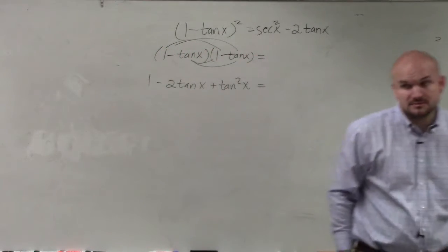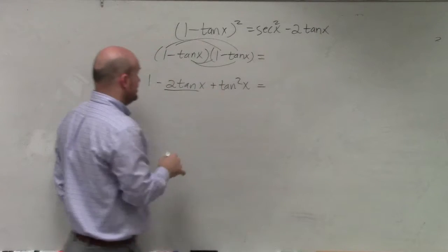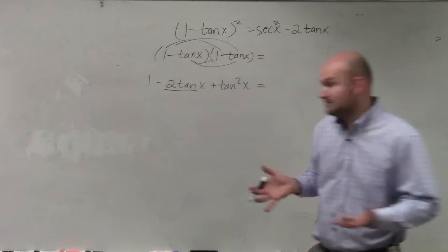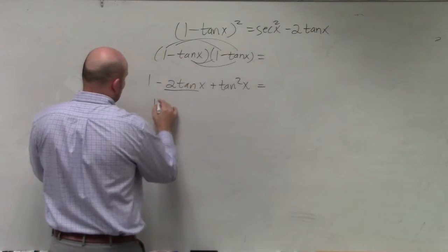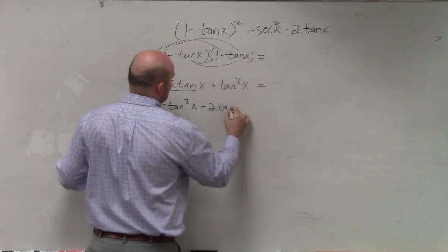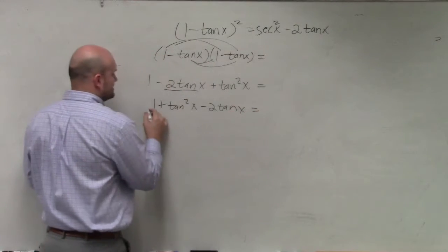Now, that's good. I got negative 2 tangent of x. That's what I want. So maybe let's combine the 1 plus tangent squared of x minus 2 tangent of x and see what we can do with this.